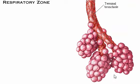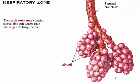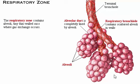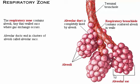Beyond the terminal bronchioles lie the structures of the respiratory zone, where we begin to find alveoli — tiny, thin-walled sacs where gas exchange occurs. Respiratory bronchioles have scattered alveoli in their walls. They lead into alveolar ducts, which are completely lined by alveoli. These ducts end in clusters of alveoli called alveolar sacs.